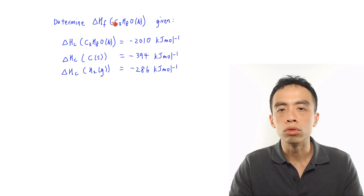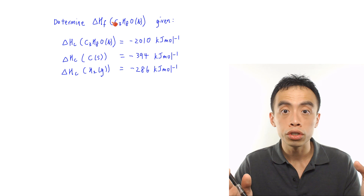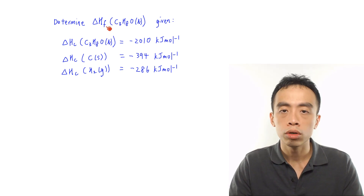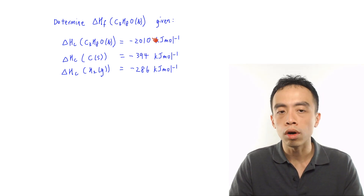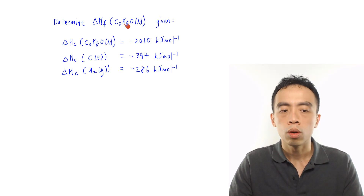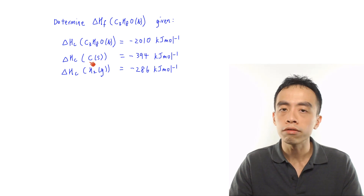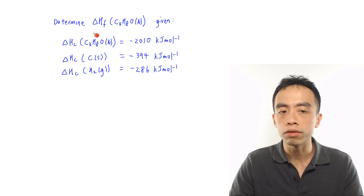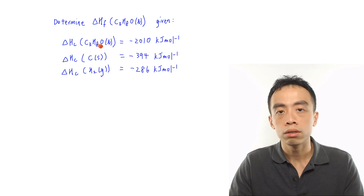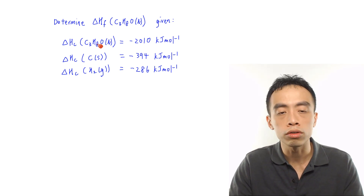The first thing we need to do is be familiar with all the enthalpy change terms. Enthalpy change of formation is the energy change when one mole of compound is formed from elements in a standard state, while enthalpy change of combustion is the energy change involved when one mole of substance is burned in excess oxygen to give products based on the substance reacting with oxygen.